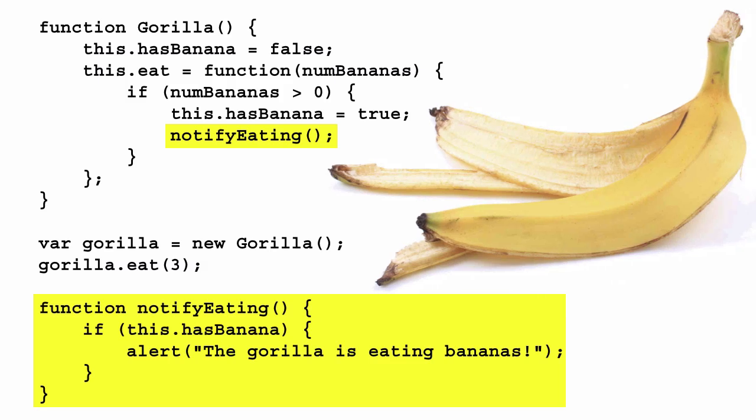You might think that when you call a function from inside a method, the value of `this` inside the function is going to be the same as in the method we called it from, but it doesn't work that way. Just like before, the value of `this` in a top-level function is set to the `window` object. So what happens is that we check to see if `window` has a property `hasBanana` that is set to `true`, and it doesn't, because `hasBanana` isn't a global variable — it's a property of the gorilla object. So we don't see the alert.